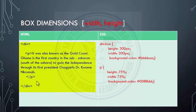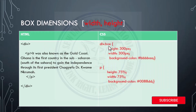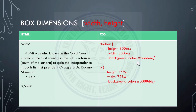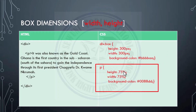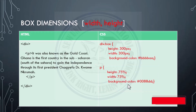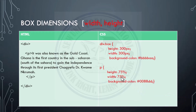This is the example — there's a div here, and a paragraph within this div with these characteristics. The box has a height of 300 and width of 300, and a background color like an ash/grey. The paragraph is also found within the box and has a height of 75% and a width of 75%, and it also has its own color.